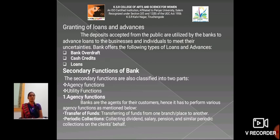Banks offer the following types of loans and advances: the first one is bank overdraft (OD), the second is cash credits, and the third is loans. Moving on to the secondary functions of banks, these are also classified into two parts: the first one is agency functions, and the second one is utility functions.